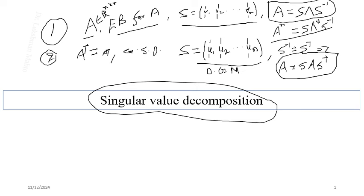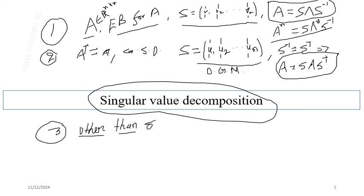Now in today's lecture we ask: can we get an orthonormal eigenbasis for matrices other than symmetric ones? This includes non-symmetric square matrices and rectangular matrices (M by N). These fall into the category of singular matrices — but that is just a classical name. The key question is how to find an orthonormal basis for such matrices.